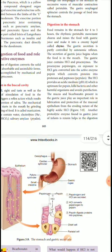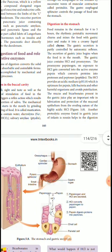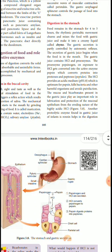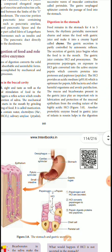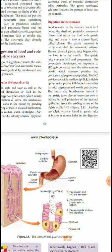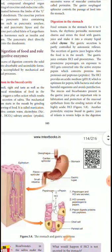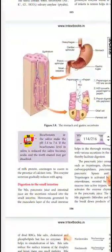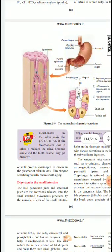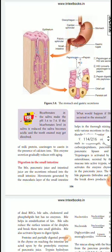The mucus and bicarbonate present in the gastric juice play an important role in lubricating and protecting the mucous epithelium from the erosive nature of the highly acidic environment. Another proteolytic enzyme in the gastric juice assists in the digestion of milk protein — casein — in the presence of calcium ions, and the enzyme gradually reduces with age.